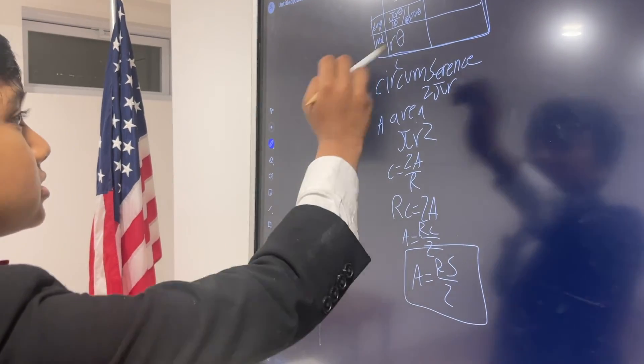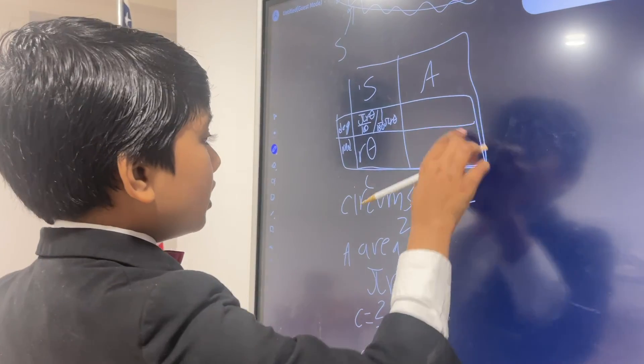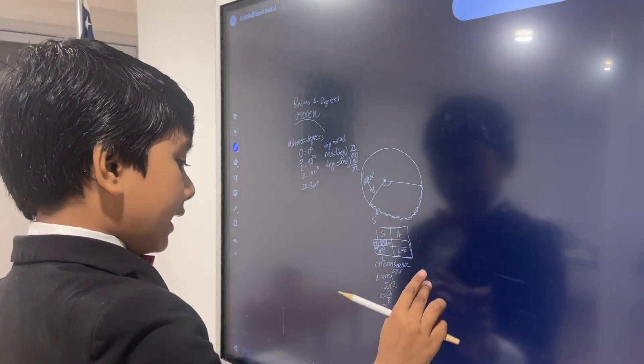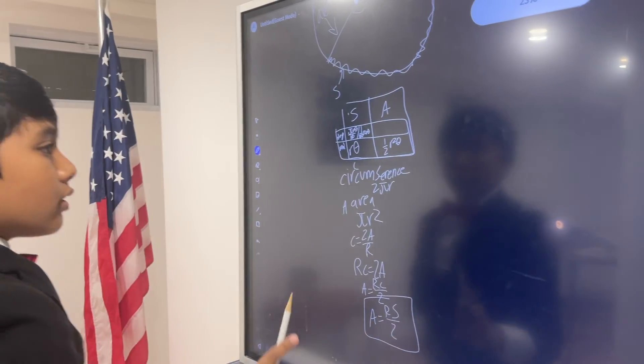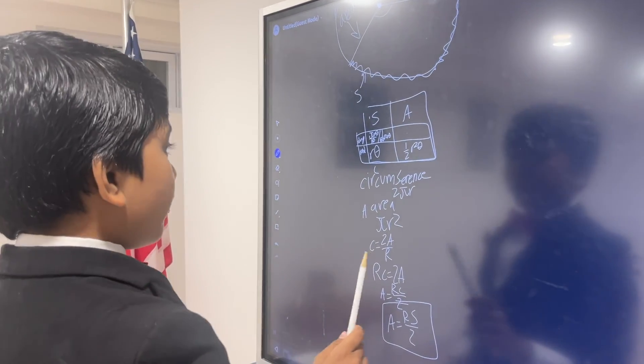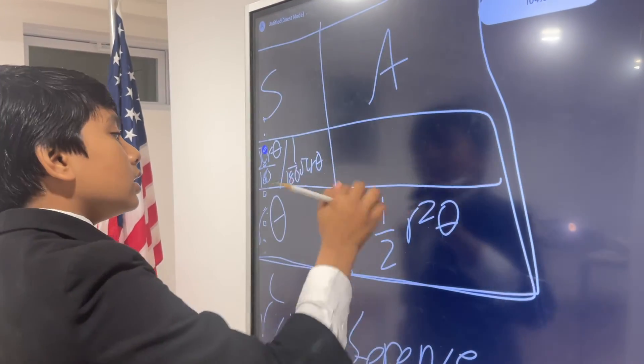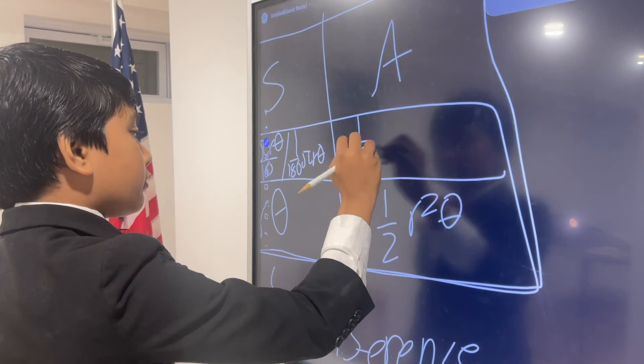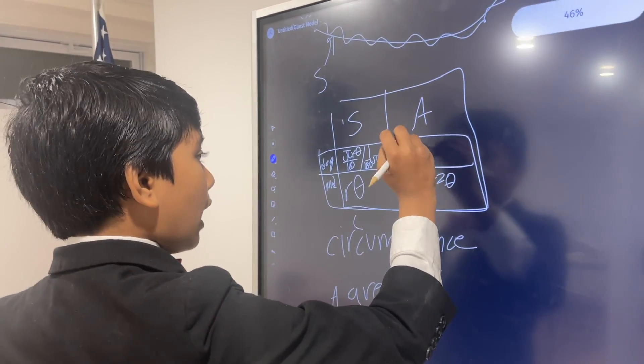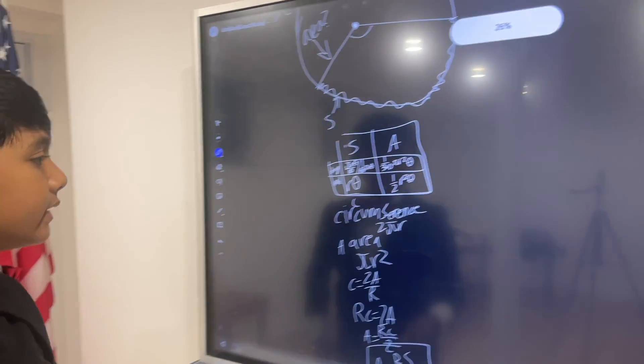So, S for radians would just be r theta. So, we would get half r squared theta. However, what about degrees? Well, first of all, we have to multiply it by r, and then divide it by 2. So, that would give us 1 over 360 times pi r squared, because we multiplied by r, then theta.